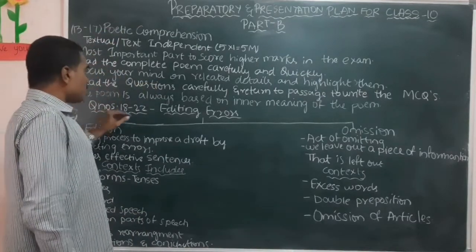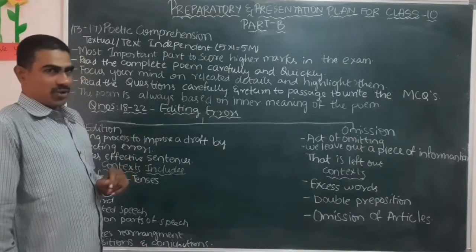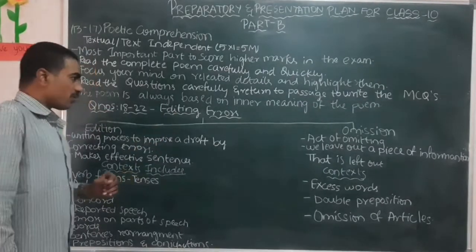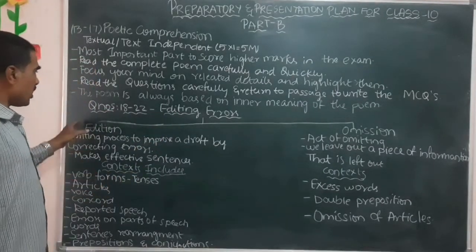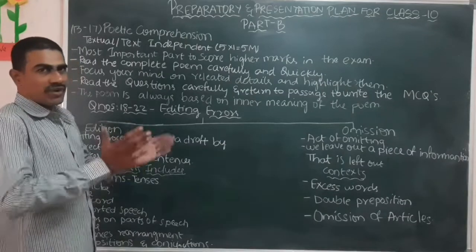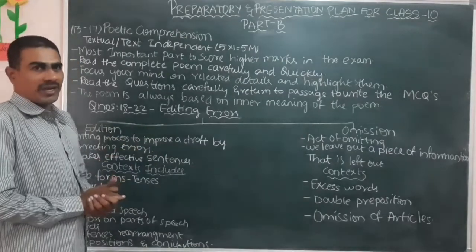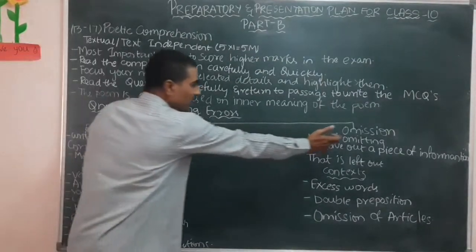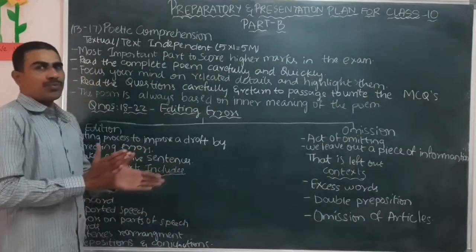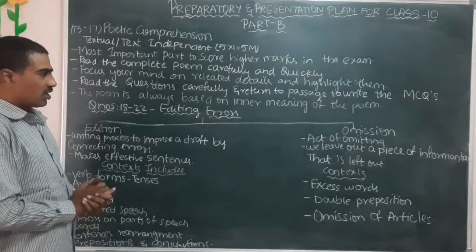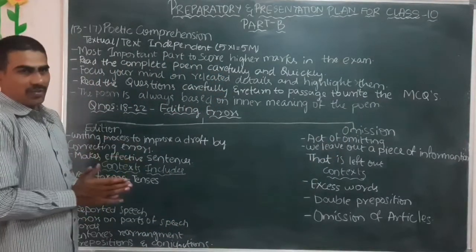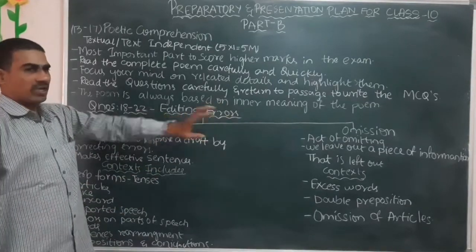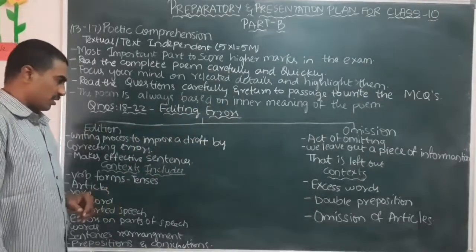The next questions, 18 to 22, are about editing errors. Here in editing errors, we have two different parts: one is editing and the other one is omission. We have to be very careful because students get confused here most of the time.